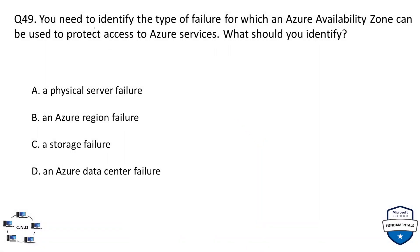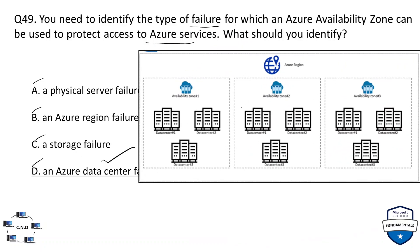Question 49: you need to identify the type of failure for which an Azure Availability Zone can be used to protect access to Azure services. What should you identify? Options are: A) a physical server failure, B) an Azure region failure, C) a storage failure, and D) an Azure data center failure. The correct option is D — Azure data center failure.